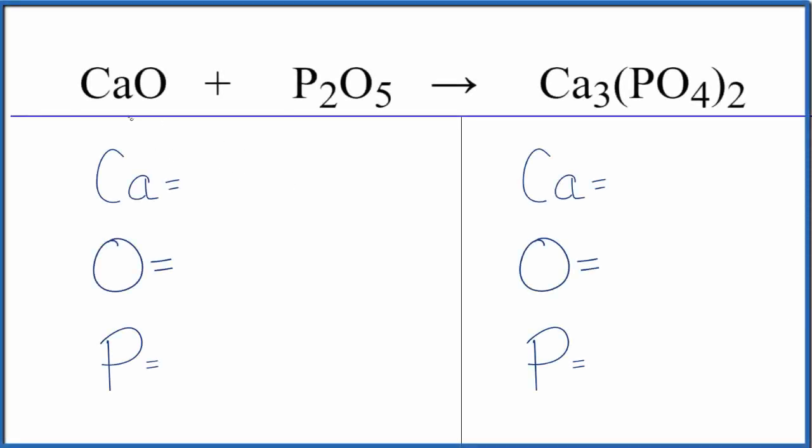If you're asked to write the balanced equation for CaO plus P2O5, that's calcium oxide plus diphosphorus pentoxide, here's how you do it. First we count the atoms up. We have one calcium and one oxygen, but don't forget these five oxygens out here.